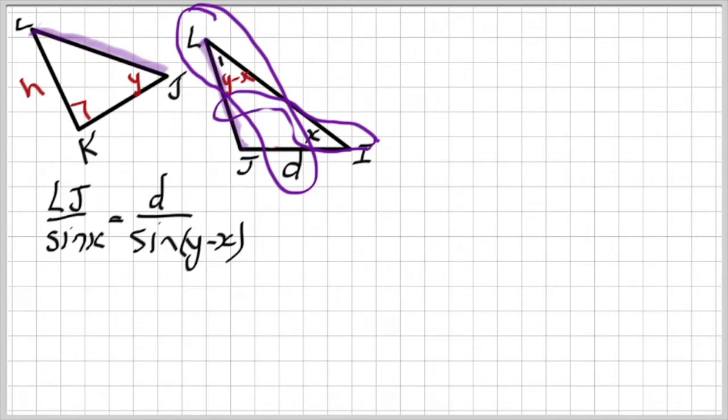My first question is, is there a 90 degrees? Yes or no? If my answer is yes, then I'm going to work with SOCATOA. If my answer is a resounding no, I've got sine, cosine, or area to think about.